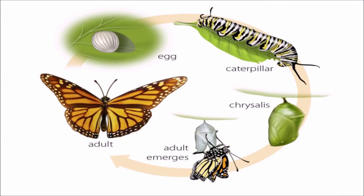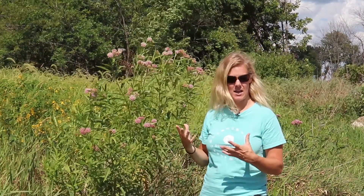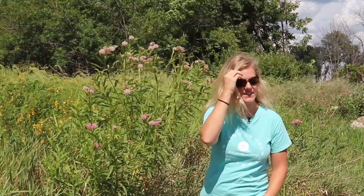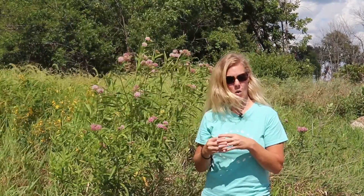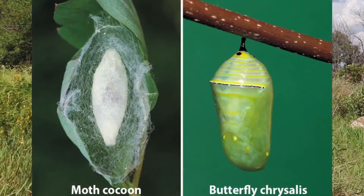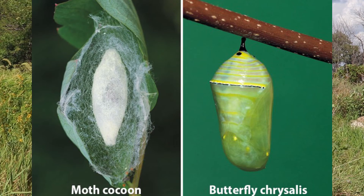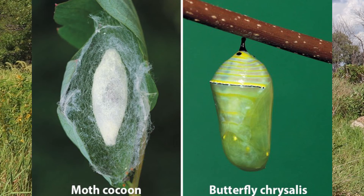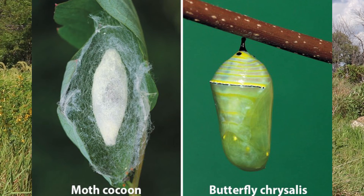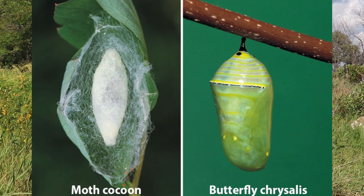They undergo complete metamorphosis, so they have an egg stage, a larval stage, a pupal stage, and then an adult stage. You may have seen the pupal stage in a cocoon, or with monarch butterflies they are in a chrysalis — a chrysalis is the pupal stage without a cocoon.